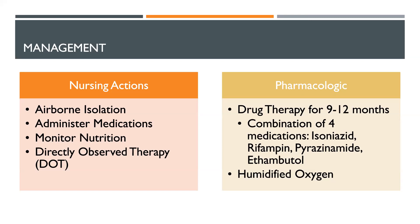Pharmacologically, drug therapy is initiated for 9 to 12 months using a combination of four medications: isoniazid, rifampin, pyrazinamide, and ethambutol. We could also provide the patient with humidified oxygen.